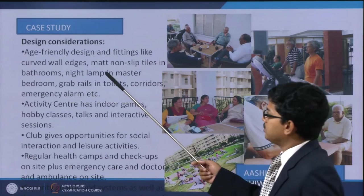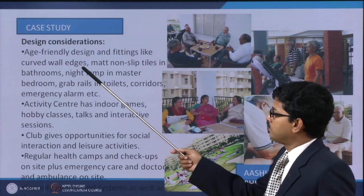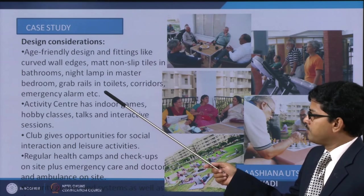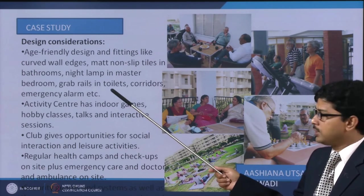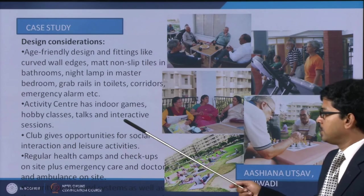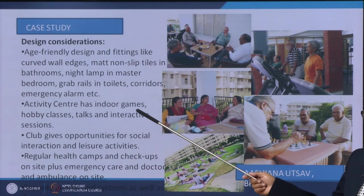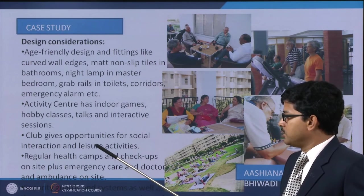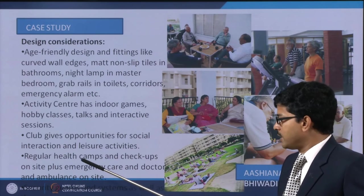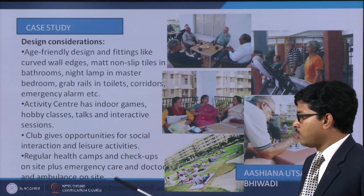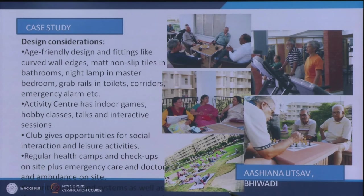The design considerations include age-friendly design and fittings like curved wall edges, matte non-slip tiles in the bathroom, night lamps in the master bedroom, grab rails in the toilet and corridors, and emergency alarms. An activity center with indoor games, hobby classes, talks, and interactive sessions is much more required for their psychological well-being. There could also be club facilities for social interaction and leisure activities, as well as regular health camps and checkups on site, emergency care, a doctor on call, and ambulance arrangements.